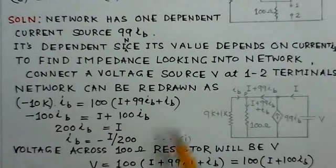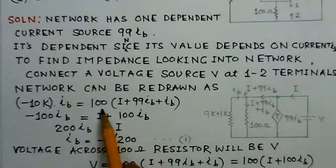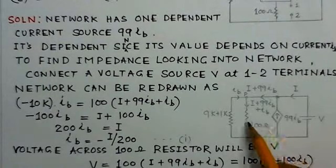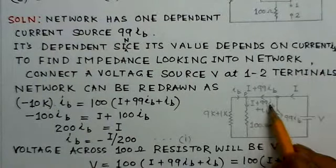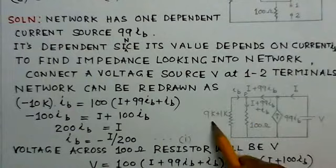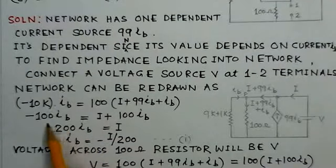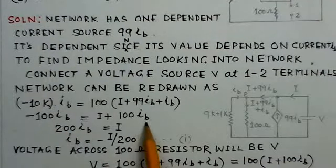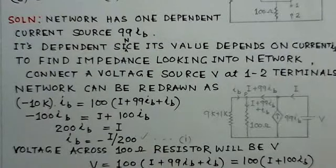The voltage across this point is minus 10K into IB. That equals the voltage across the 100 ohm resistor, which carries current I plus 99 IB plus IB. The voltages are the same since they are equal nodes, so we equate them: minus 100 IB equals I plus 100 IB. Solving this gives 200 IB equals I, or IB equals minus I over 200.